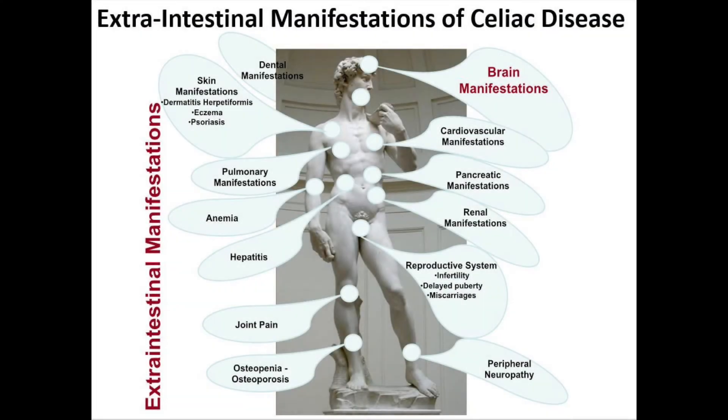For many years, celiac disease was thought of as primarily a gastrointestinal disease affecting children between nine months and two years of age, presenting with belly pain, constipation, abdominal distension, weight loss, and anorexia. But we now know that celiac disease is a systemic autoimmune disease that can affect any tissue and organ in the body. Patients may present with rash, joint pain, anxiety, or depression, and may have signs such as infertility, anemia, or elevated liver enzymes.